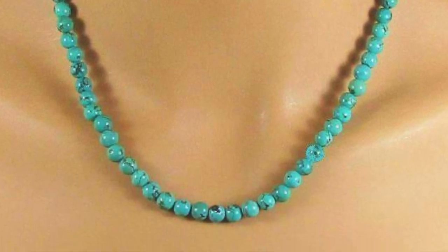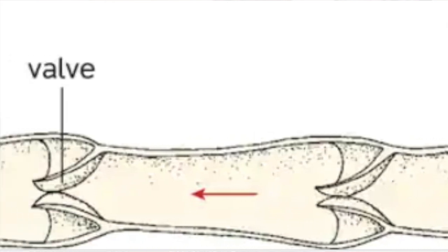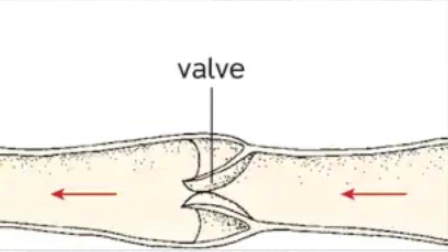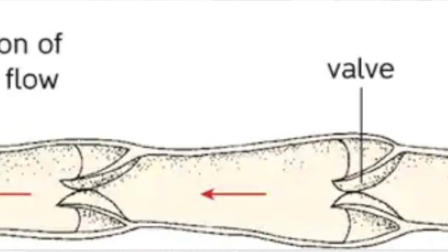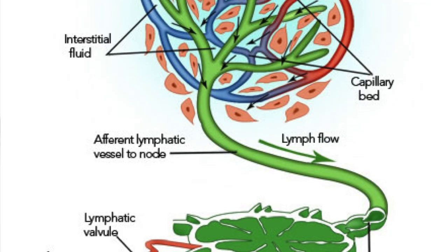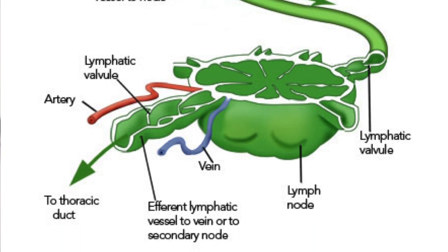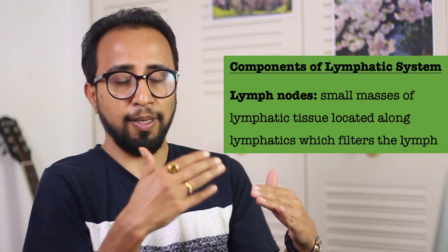The beaded appearance of lymphatic vessels has an anatomical correlation — at sites where valves are present to prevent backflow of lymph, that portion is swollen, giving the vessels a beaded appearance. As lymph flows through the lymphatic vessels, it may contain pathogens or cellular debris that need screening. The screening gate is the lymph node — a small mass of lymphatic tissue present along the lymphatics that helps filter the lymph.